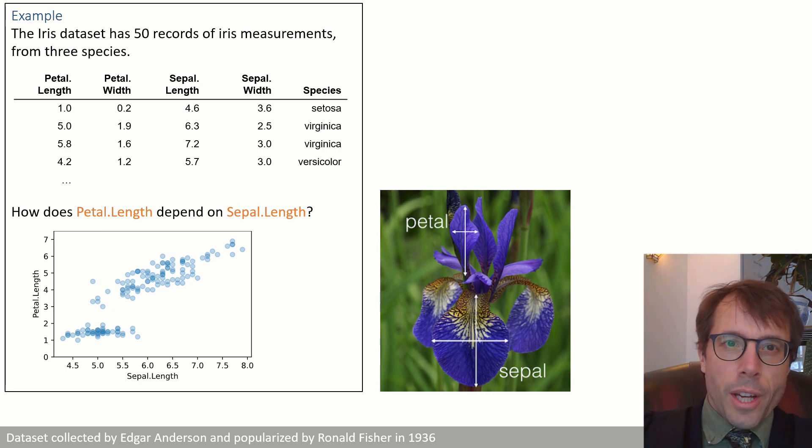This data set has 50 rows, each row with a measurement for a particular iris and it lists several attributes, the petal dimensions, the sepal dimensions and the species.